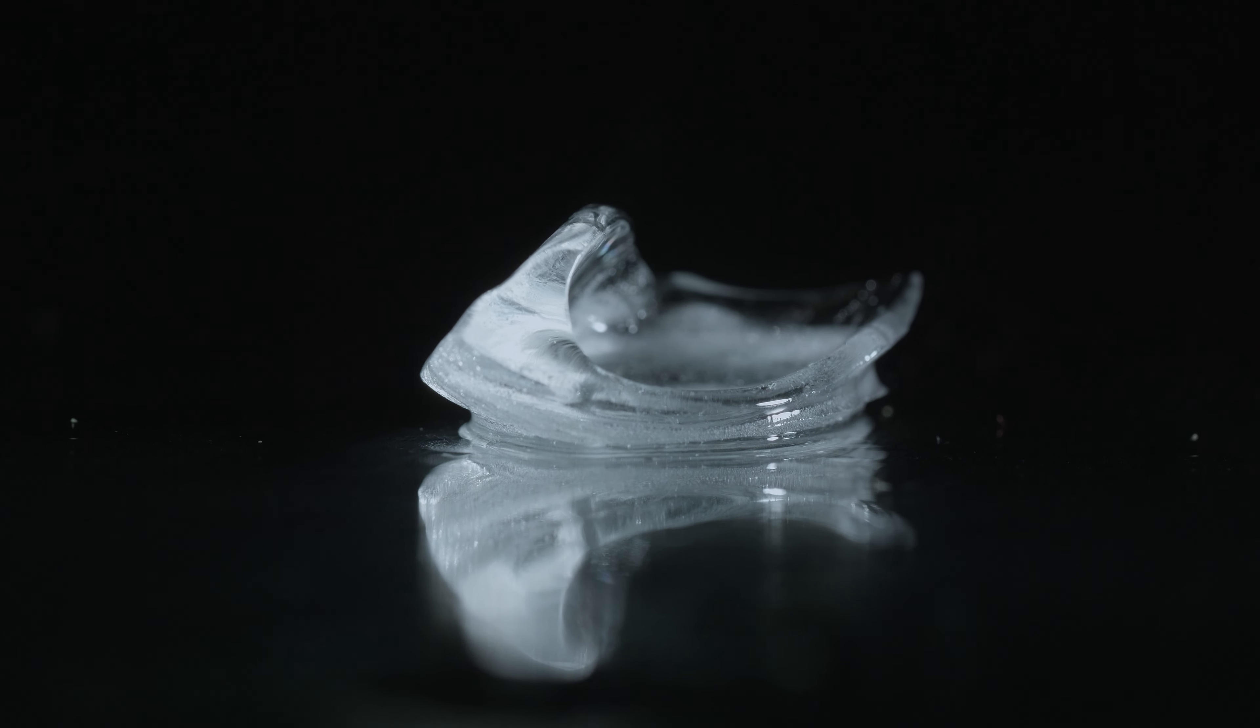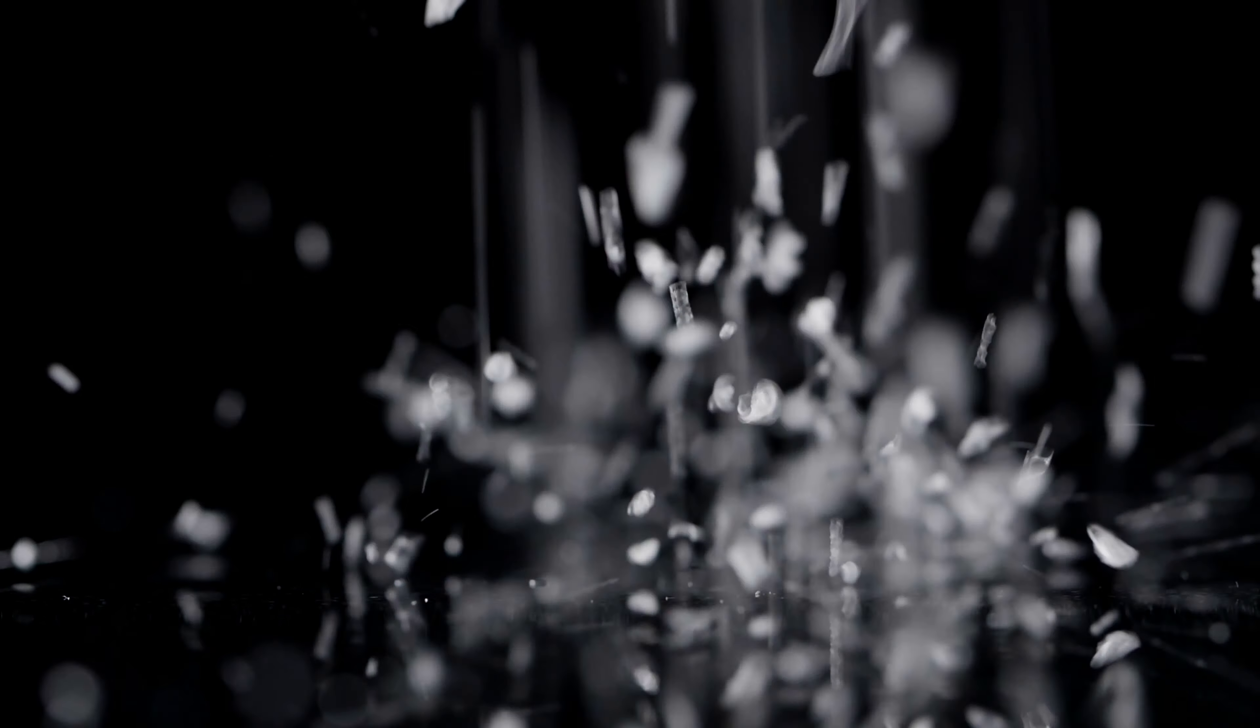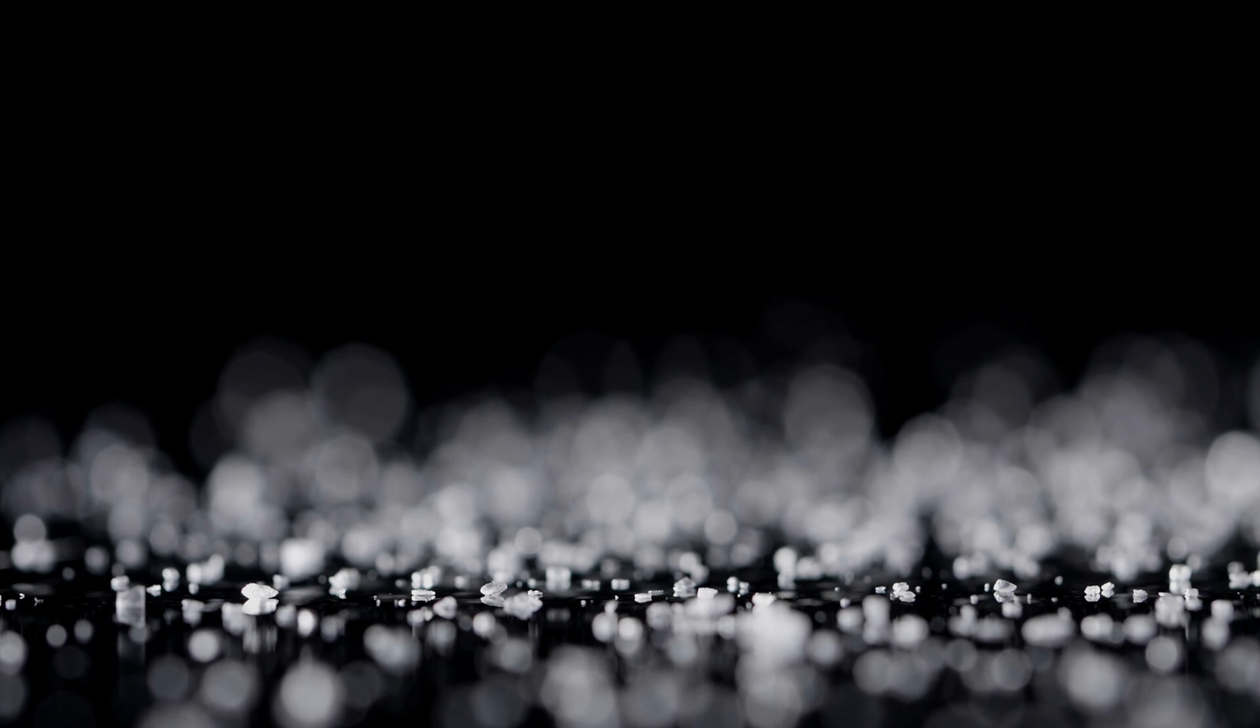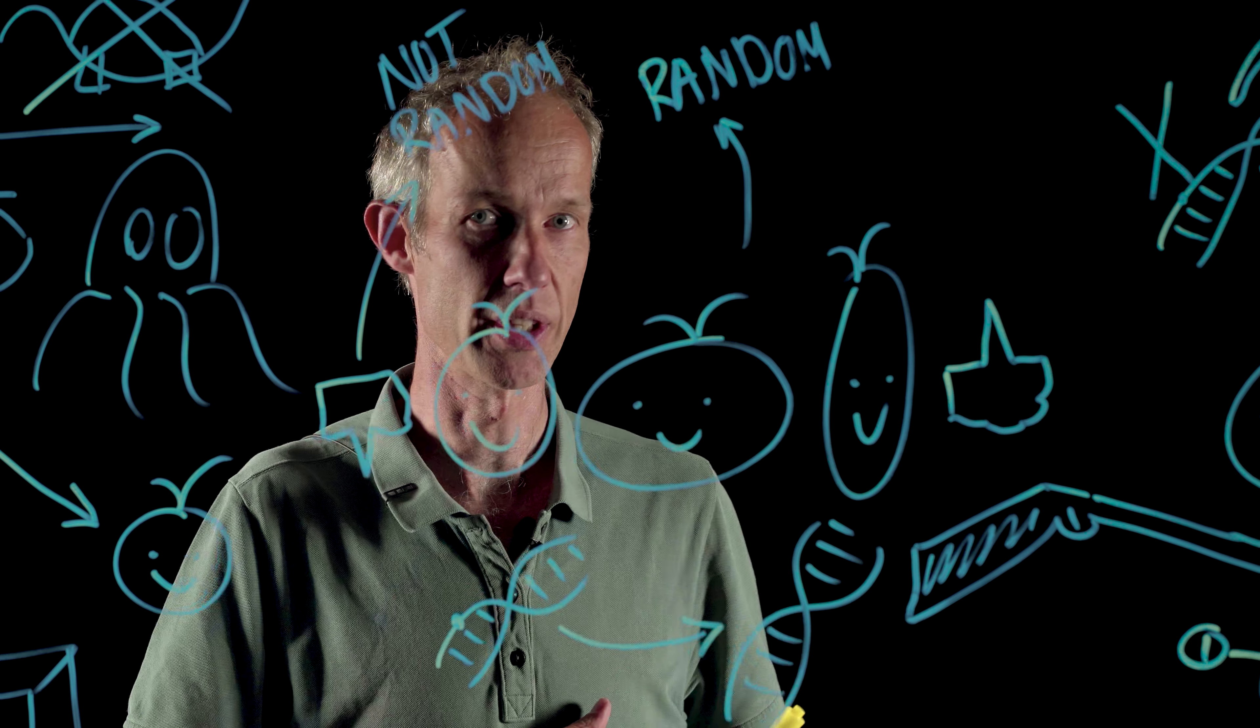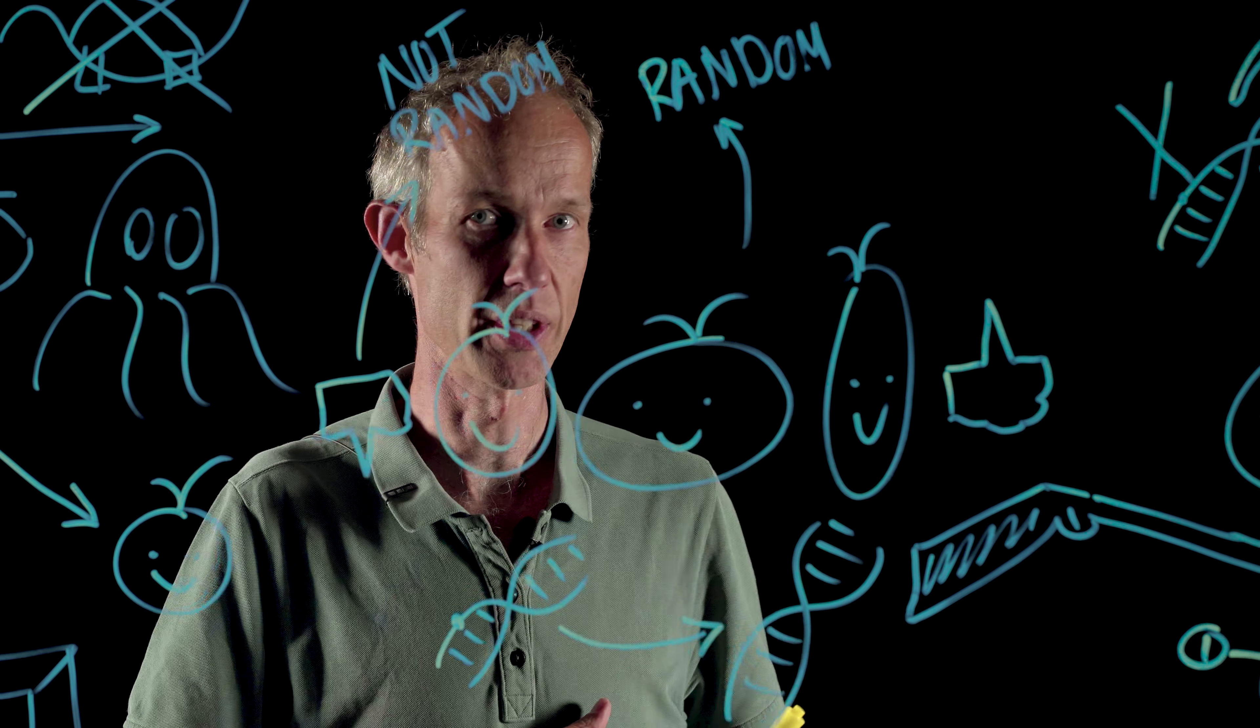So here we have a system where evolution is completely predictable. So what we want to know now is whether evolution is still predictable when we change the circumstances under which these worms live. So for example, we can lower the temperature or we can add salt, which the worms also do not like. And then we check whether evolution will still find the same solutions to these problems.